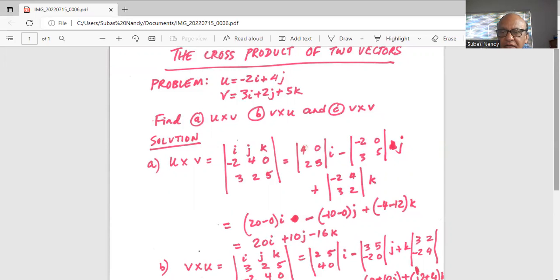So the final answer is 20i, plus 10, because 2 minuses make it positive, plus 10j, minus 16k.